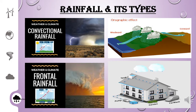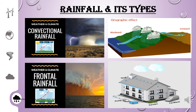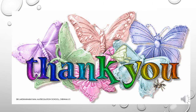Rainwater must be saved and not wasted. There is a method called rainwater harvesting. It is a technique of collecting and storing rainwater into a natural reservoir. I hope you all understood the concept of atmosphere. Let us save water, save earth, save life. Thank you.